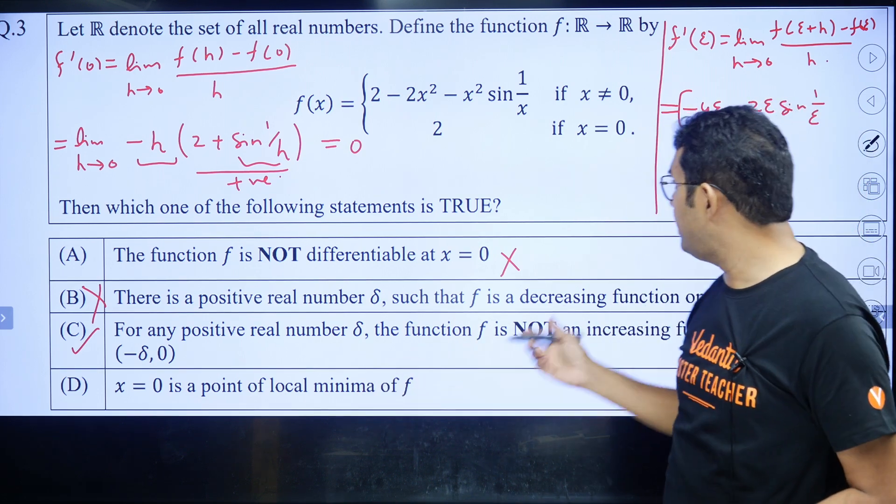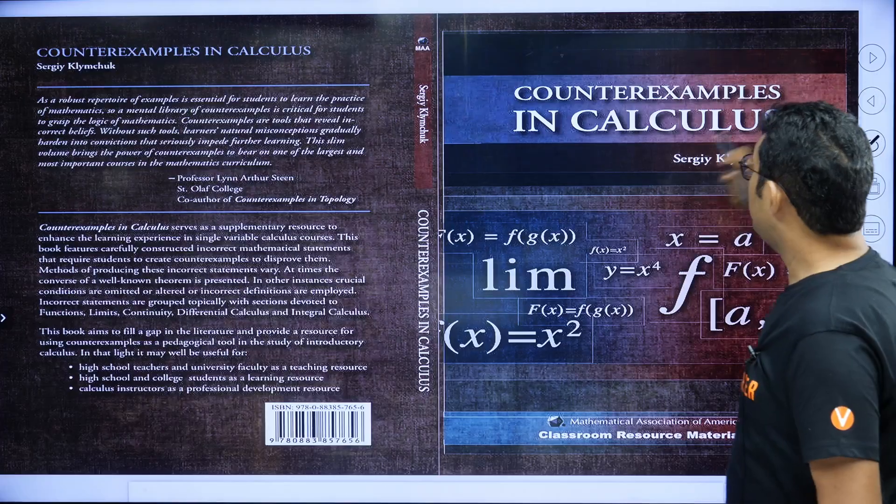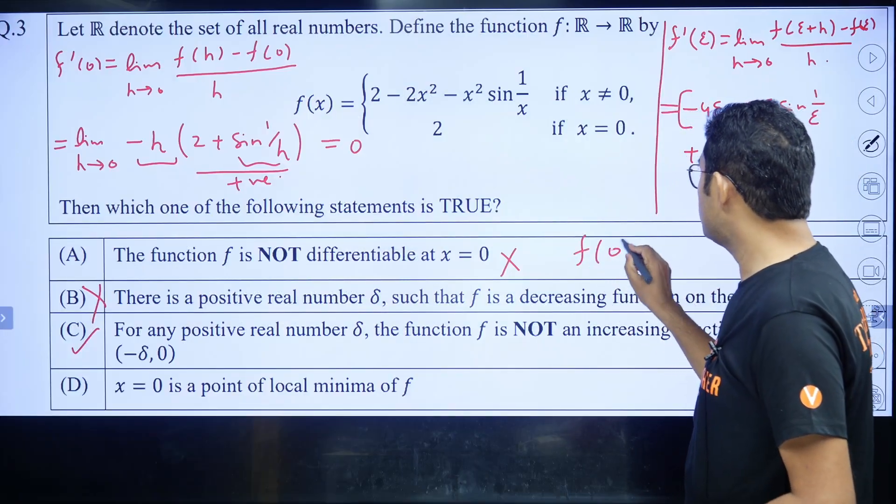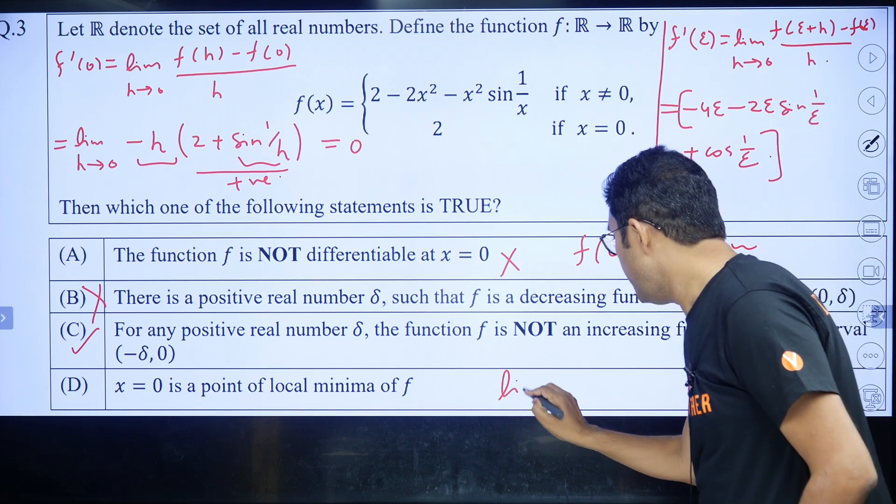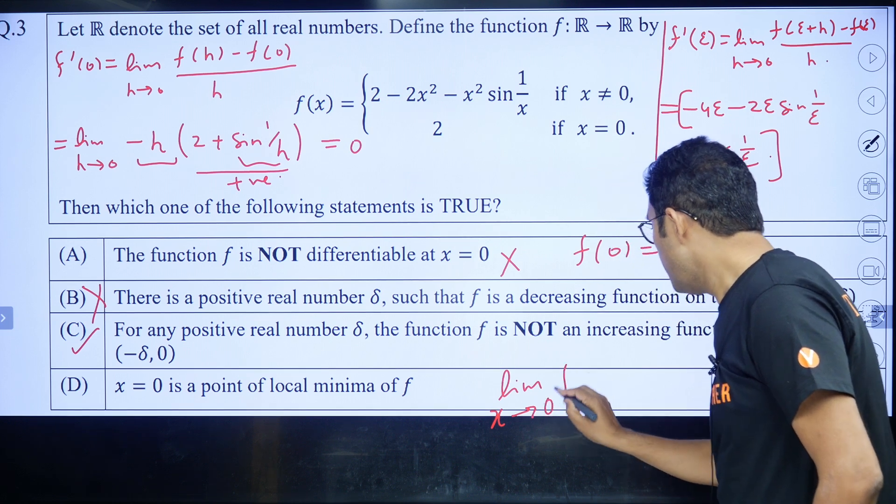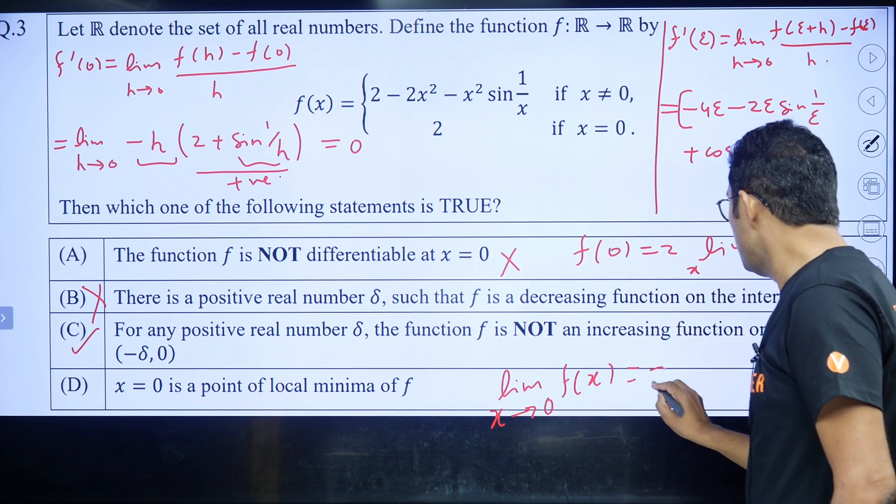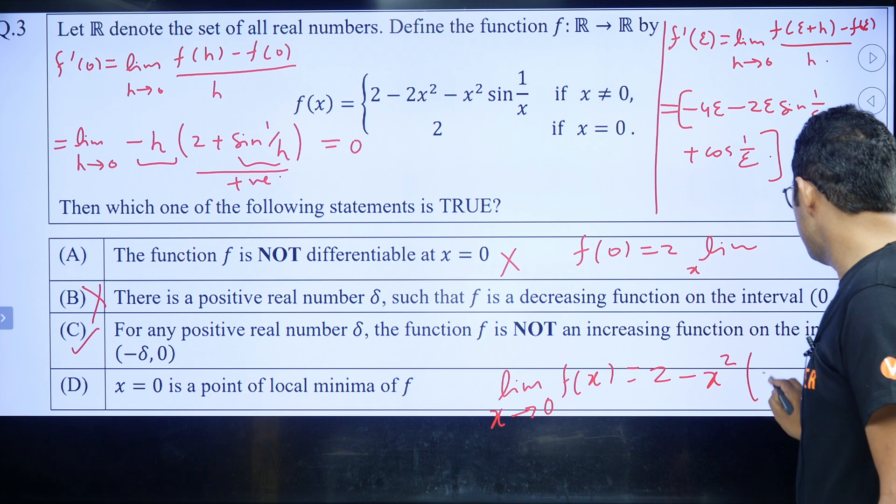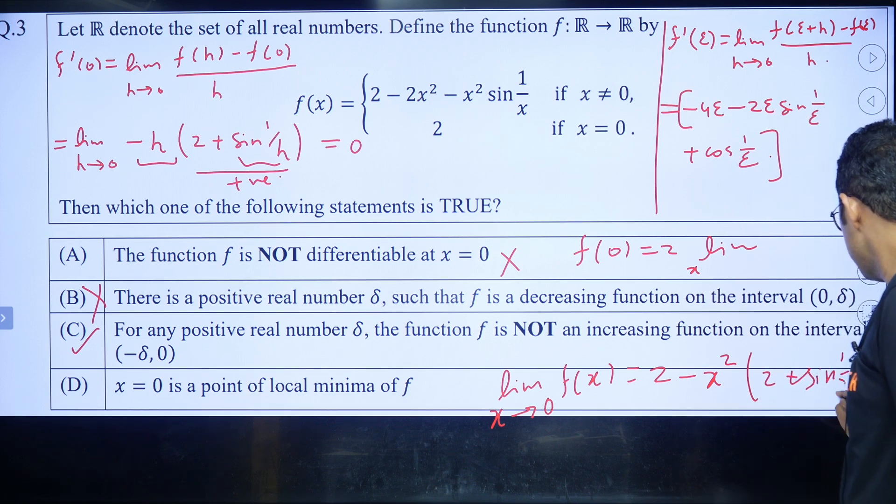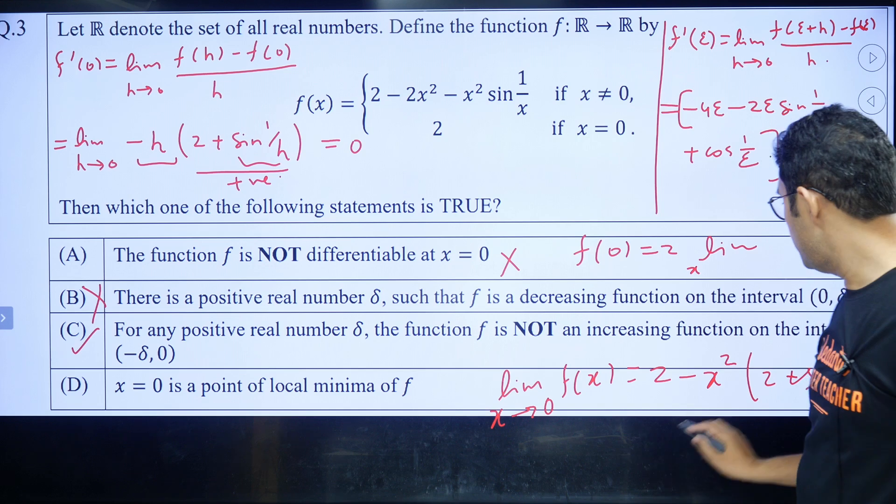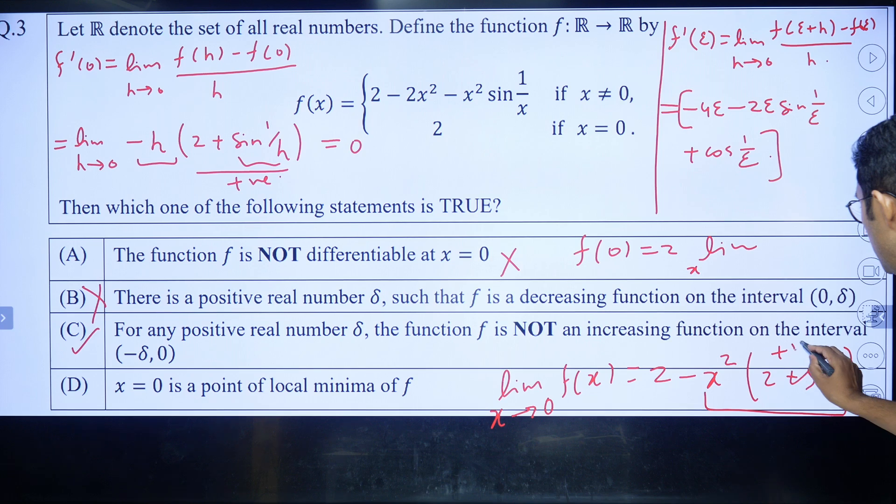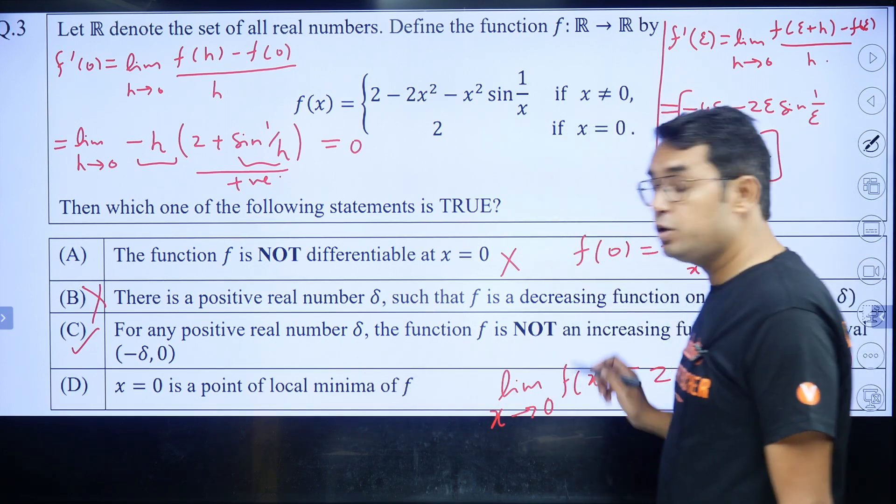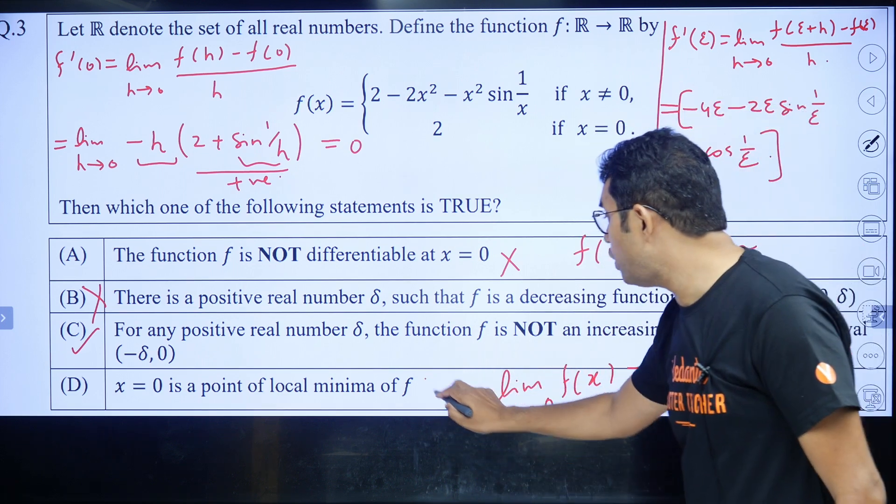Option D says x = 0 is a local minima. You can check easily - f(0) = 2, but limit x → 0 of f(x) would be 2 - x²[2 + sin(1/x)]/2. You can see for x approaching 0, this is a positive quantity because 2 + sin(1/x) is positive. So f(x) will be less than 2. So x = 0 is a point of maxima, not minima. That's why this option is also wrong.